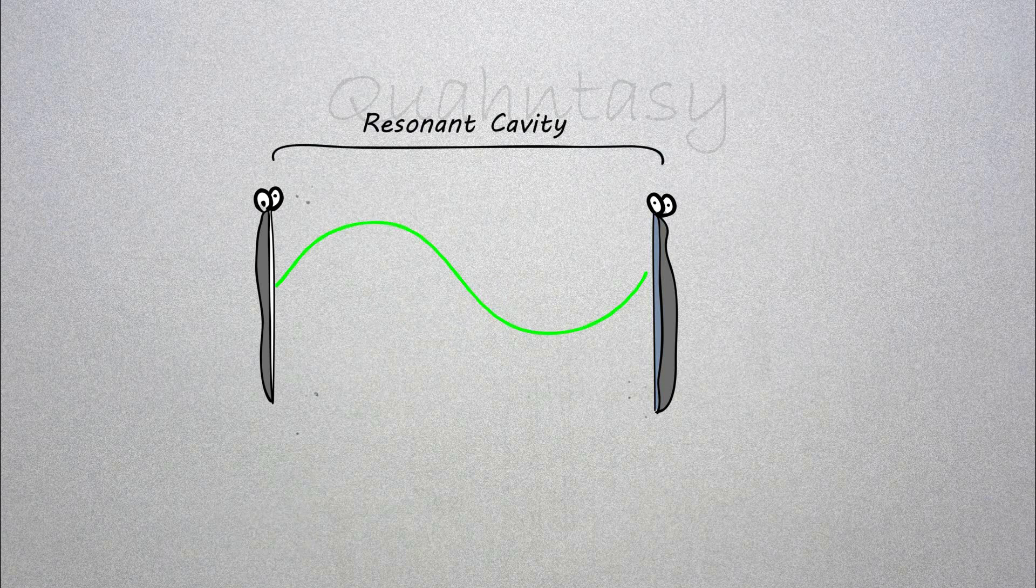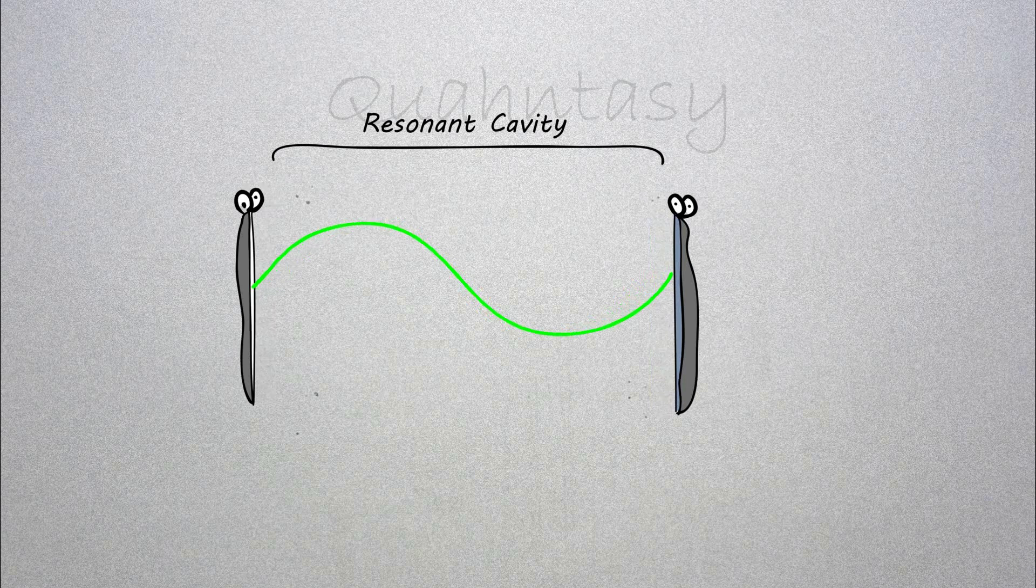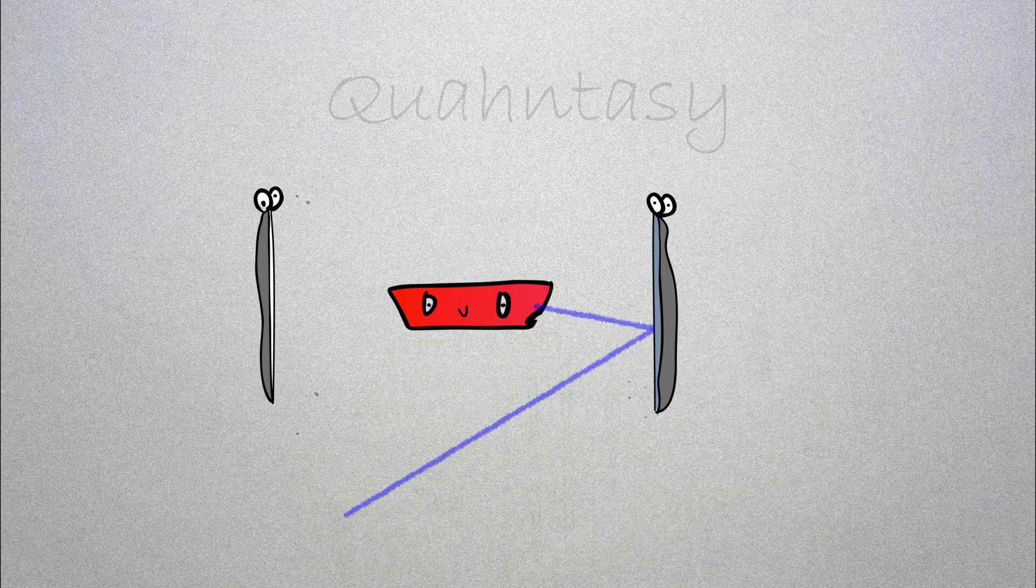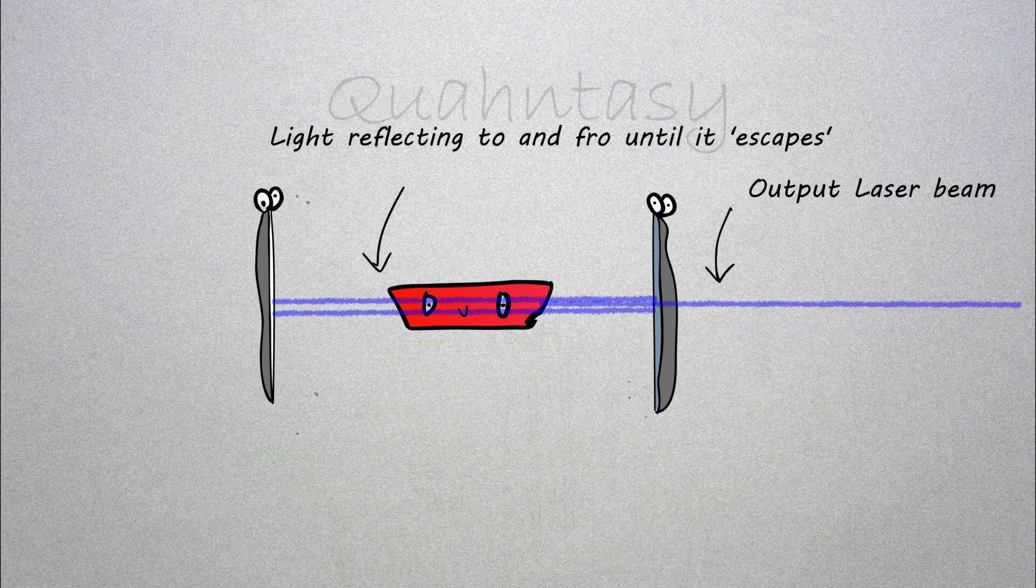Inside this resonant cavity, two things happen. First, any light rays that don't line up with the axis eventually exit from the playground. And the light parallel to the axis becomes intensified and narrowed in wavelength.